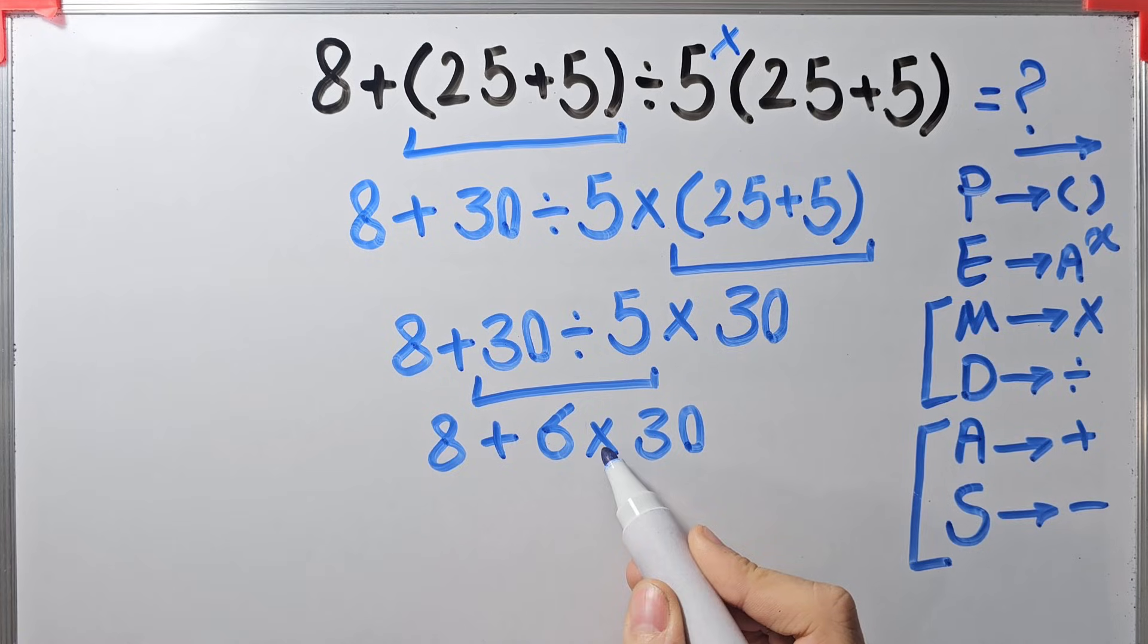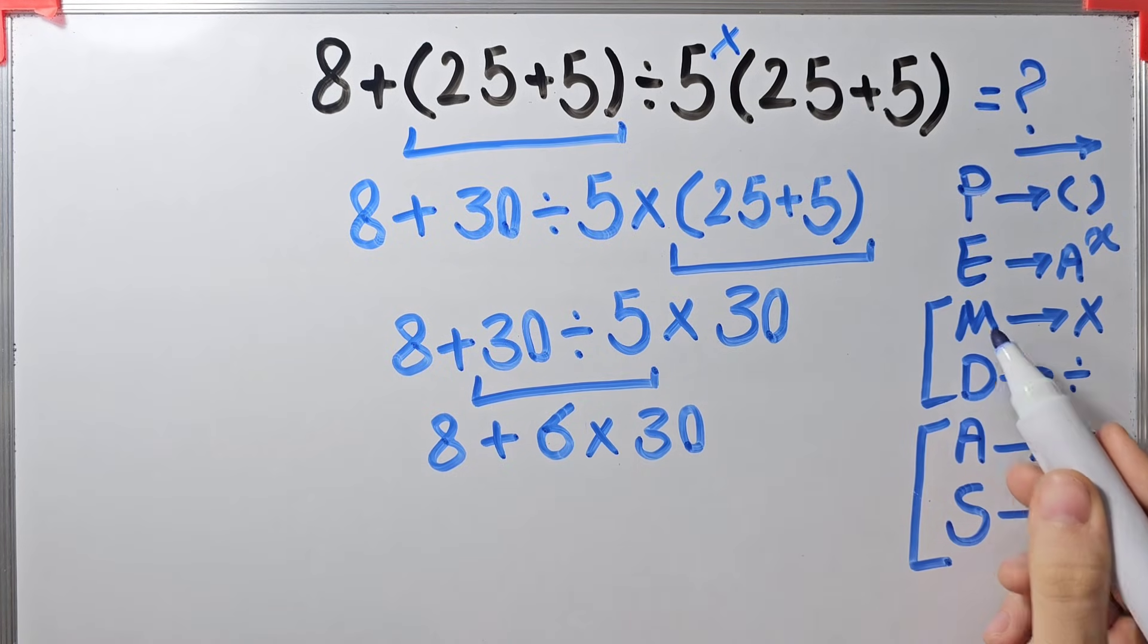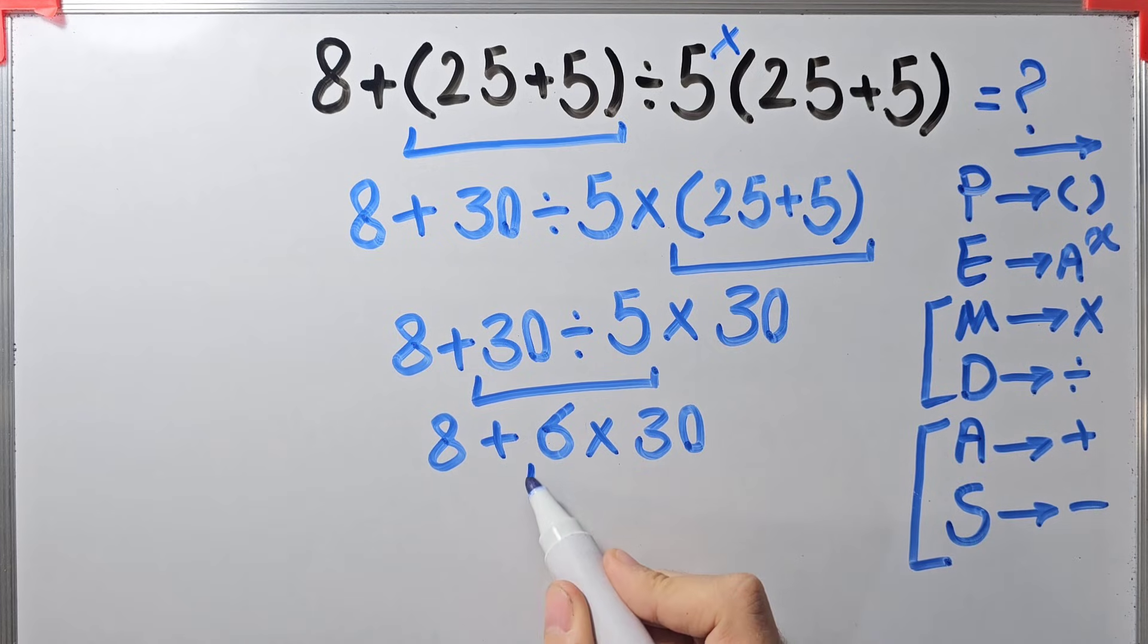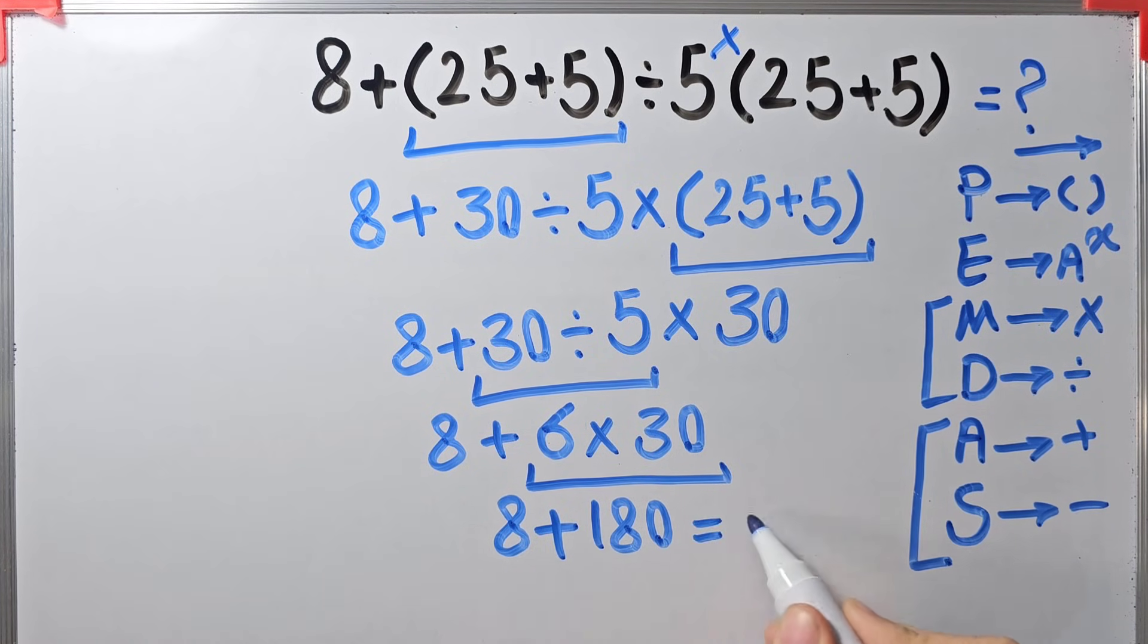In this step we simplify this multiplication because multiplication has higher priority than addition. 6 times 30 equals 180. Now we have 8 plus 180. 8 plus 180 equals...